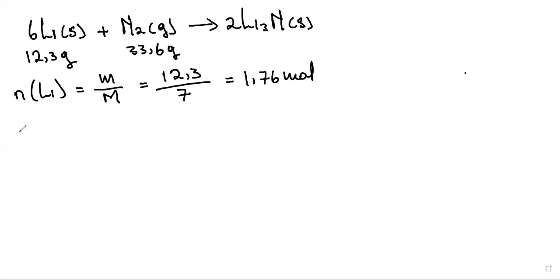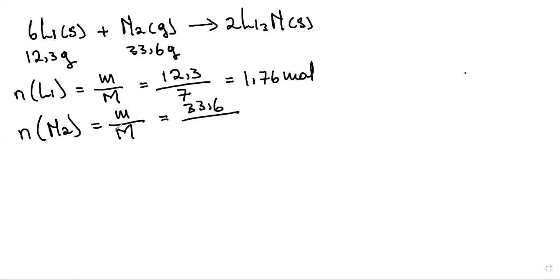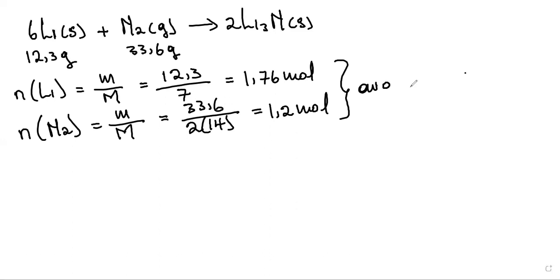For nitrogen gas, we use mass divided by molar mass. The mass is 33.6 g, and since nitrogen gas is diatomic (N₂), the molar mass is 2 × 14 = 28 g/mol. Dividing 33.6 by 28 gives us 1.2 moles of nitrogen gas. So both reactants' available moles at the start of the reaction are now known.